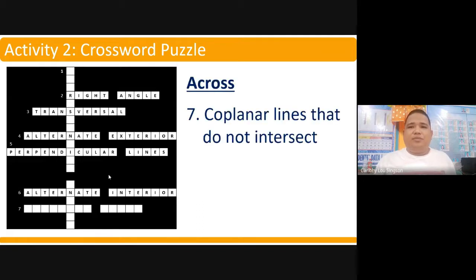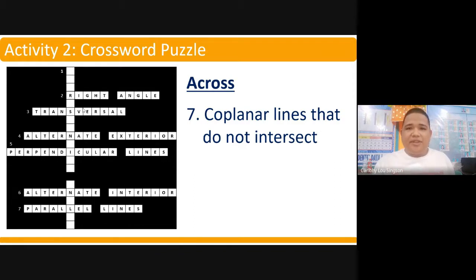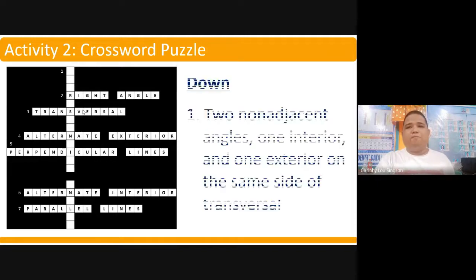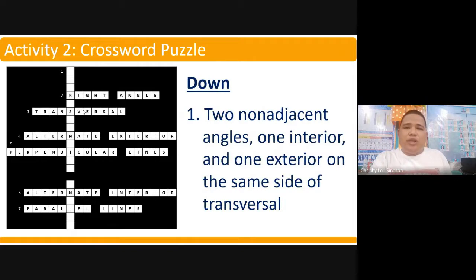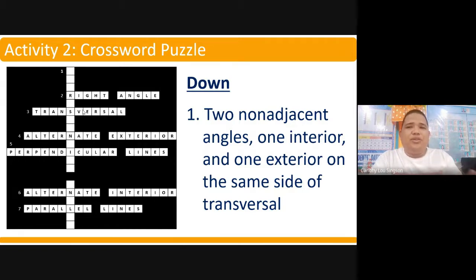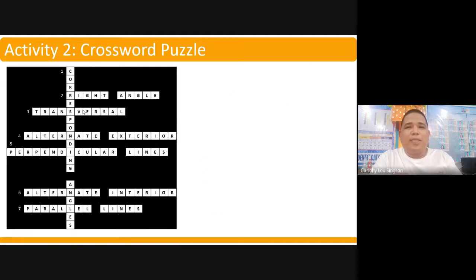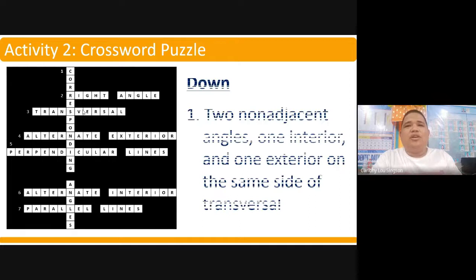Number seven: coplanar lines that do not intersect — we call those parallel lines. And for the word going down, number one: two non-adjacent angles, one interior and one exterior, on the same side of the transversal. We call those corresponding angles.